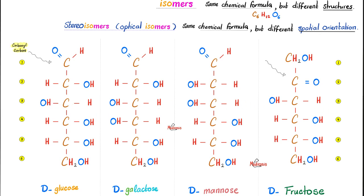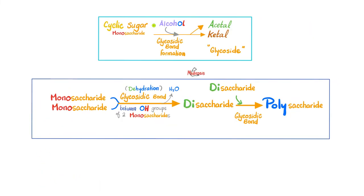Look at all of these lovely isomers: glucose, galactose, mannose, fructose — all of them are hexose sugars. Please do not confuse mannose with maltose. Mannose is a monosaccharide. Maltose is a disaccharide made of two glucose molecules. If you add monosaccharide to monosaccharide and make a glycosidic bond, what do you get? A disaccharide. And then keep adding, you end up with a polysaccharide. The name of that bond or linkage is a glycosidic linkage.